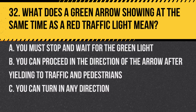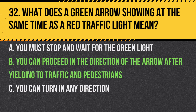Question 32. What does a green arrow showing at the same time as a red traffic light mean? a. You must stop and wait for the green light. b. You can proceed in the direction of the arrow after yielding to traffic and pedestrians. c. You can turn in any direction. Answer: b. You can proceed in the direction of the arrow after yielding to traffic and pedestrians. The green arrow indicates permission to go in the arrow's direction.